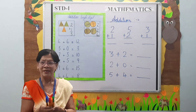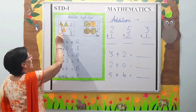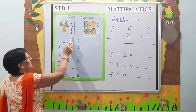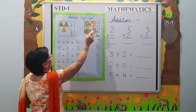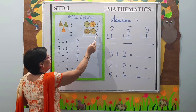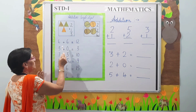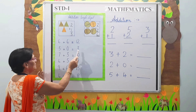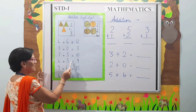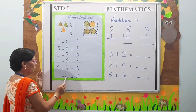Our next topic is addition — single digit. 2 plus 1 is equal to 3. 2 balls plus 2 balls is equal to 4 balls. 6 plus 6 is equal to 12. 3 plus 0 is equal to 3. 7 plus 3 is equal to 10. 4 plus 5 is equal to 9. 9 plus 6 is equal to 15. 4 plus 4 is equal to 8.